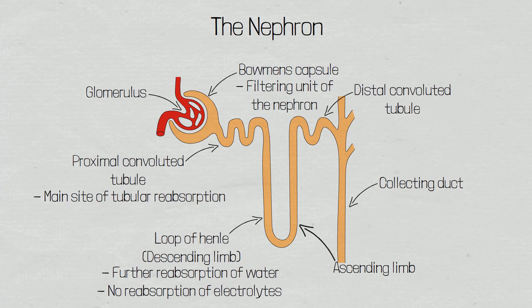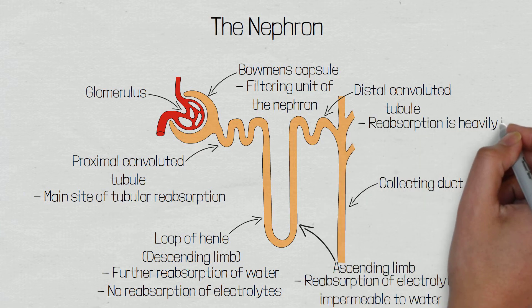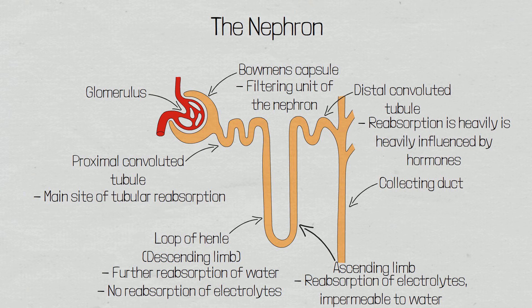The ascending limb of the loop of Henle is responsible for further reabsorption of electrolytes, such as sodium, potassium and chloride, but it is impermeable to water. The filtrate will now enter the distal convoluted tubule and the collecting duct. Reabsorption of solutes and water in these areas are heavily influenced by hormones, such as parathyroid hormone, aldosterone and antidiuretic hormone. The solution that is left we refer to as urine.